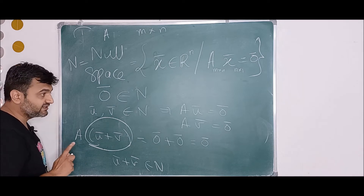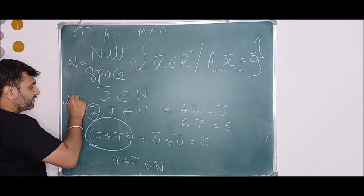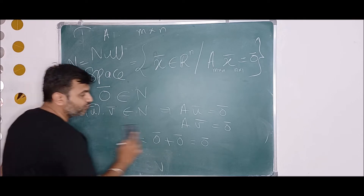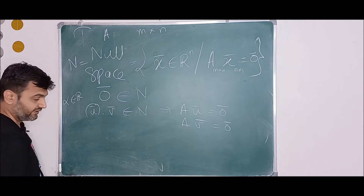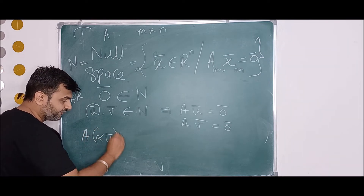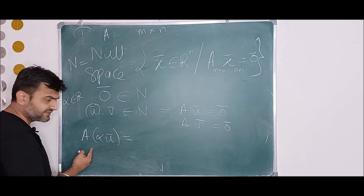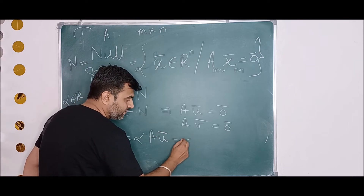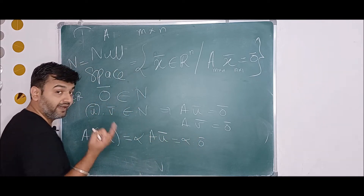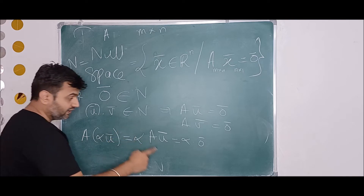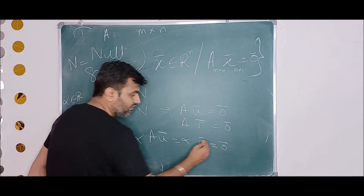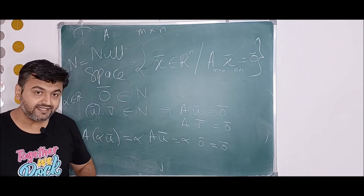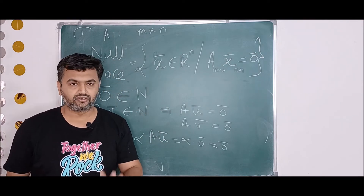Third condition: if U-bar is in N and alpha is a real number, we want to show alpha times U-bar is in N. We compute A times (alpha U-bar) equals alpha times (A U-bar). Since U-bar is in N, A U-bar equals zero-bar, so this is alpha times zero-bar, which is zero-bar. Therefore this collection forms a subspace, and that is why we call it the null space rather than the null set.